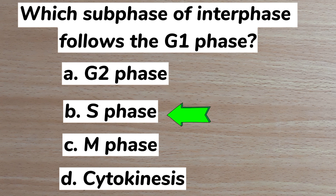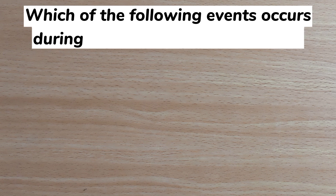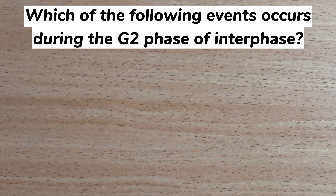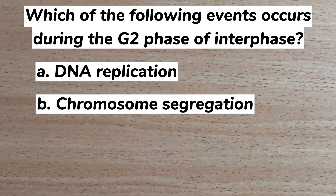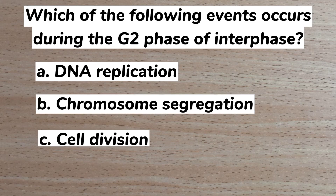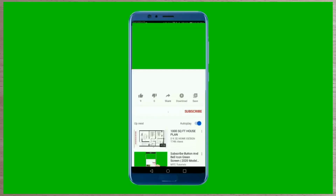Number twelve: which of the following events occurs during the G2 phase of interphase? A. DNA replication, B. Chromosome segregation, C. Cell division, D. Preparation for mitosis. Answer: D. Preparation for mitosis.